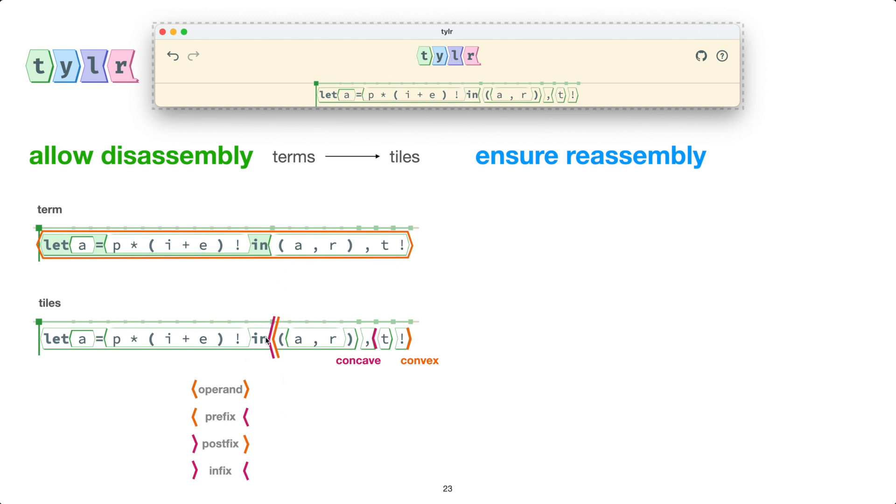And it turns out that a tile sequence having this overall convex shape and all of its neighboring tiles fitting together in this way is equivalent to parseability into the term structure. So Tyler makes sure that these geometric properties are satisfied as we edit.